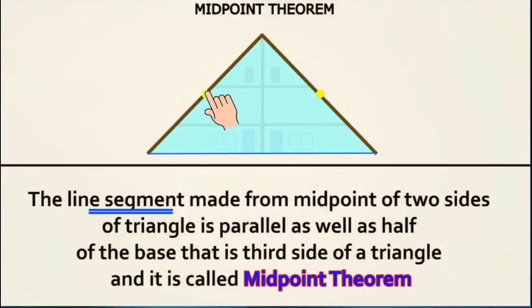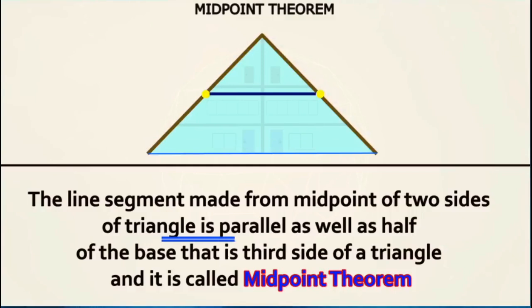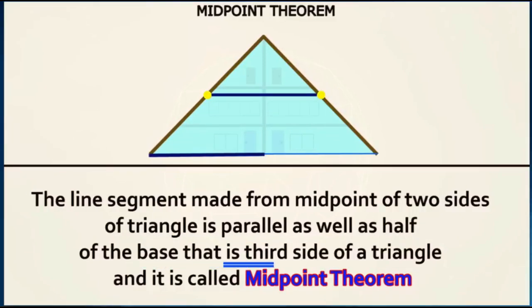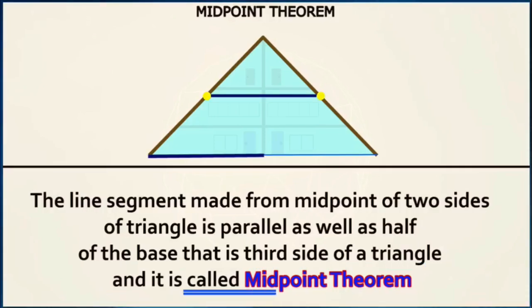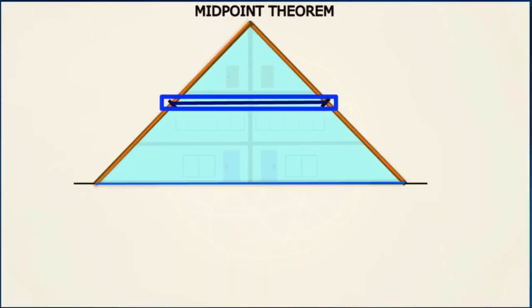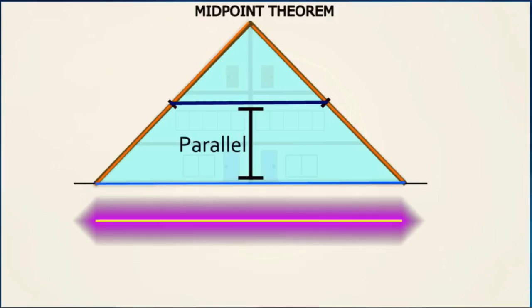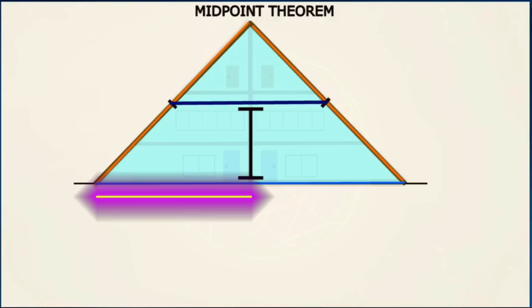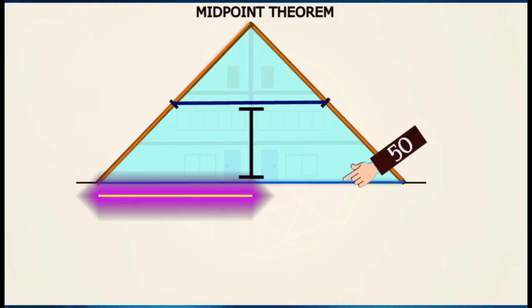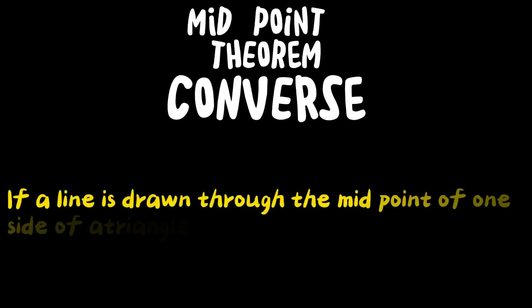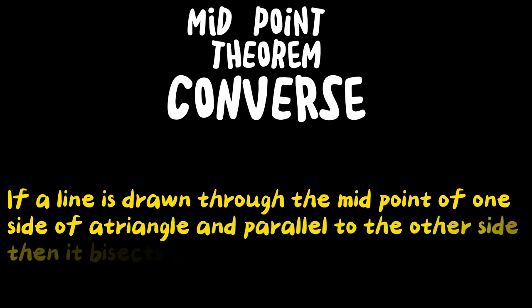The line segment joining the midpoint of two sides of a triangle is parallel to the third side and equal to half of the third side.